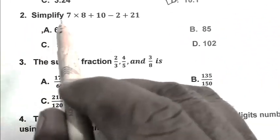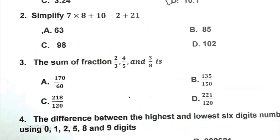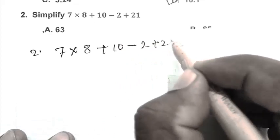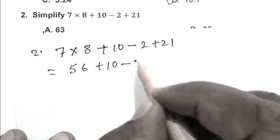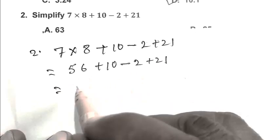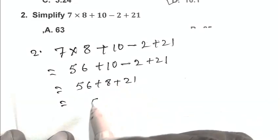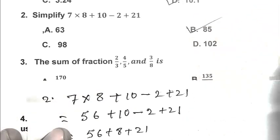Question number 2: Simplify 7 multiplied by 8 plus 10 minus 2 plus 21. We can write the expression as 7 multiplied by 8 plus 10 minus 2 plus 21, that is 56 plus 10 minus 2 plus 21, which gives 56 plus 8 plus 21, equals 85. So B is the right answer.